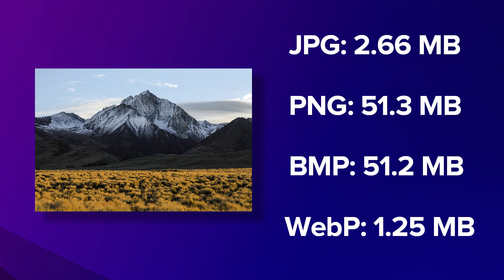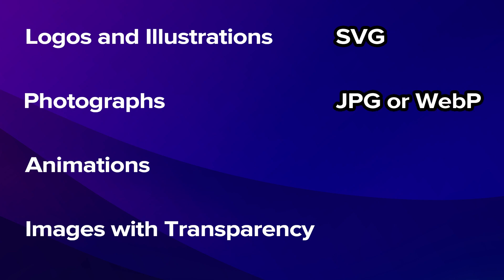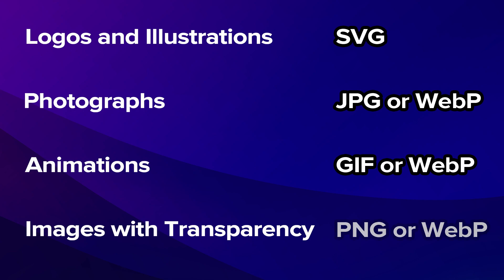Here are some examples on screen showing the massive difference in size between BMP, JPG, PNG, and WebP images. That is why choosing the right image format is critical to your website's performance. Here are some basic guidelines: for logos and illustrations, the best format is SVG. For photographs or regular pictures, use JPG or WebP. For animated images, GIF or WebP is your best bet. For transparent images or images with a transparent background, use WebP or PNG.